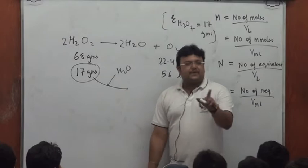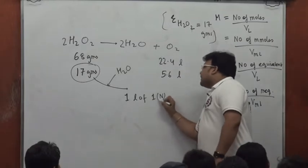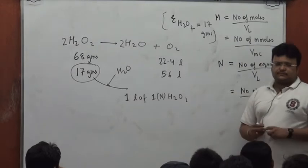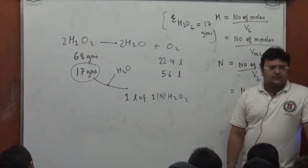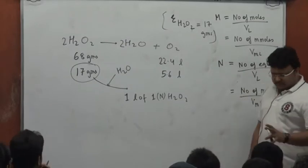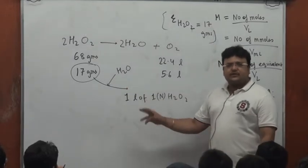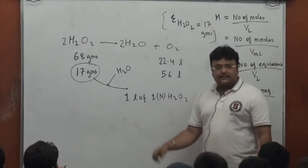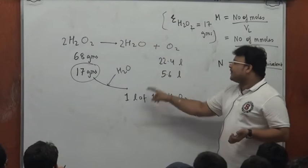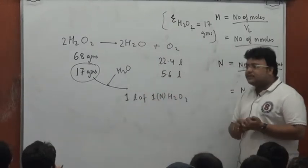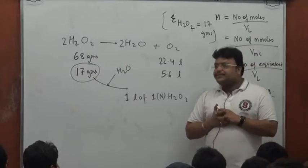Take 17 grams of pure H₂O₂, add enough water, make it one liter. Can I call it one liter of one normal H₂O₂? Yes — 17 grams is the equivalent weight, so 17 grams is one equivalent. One equivalent per liter makes it one normal. And this one liter can give you 5.6 liters of oxygen, so you can call it 5.6 volume.